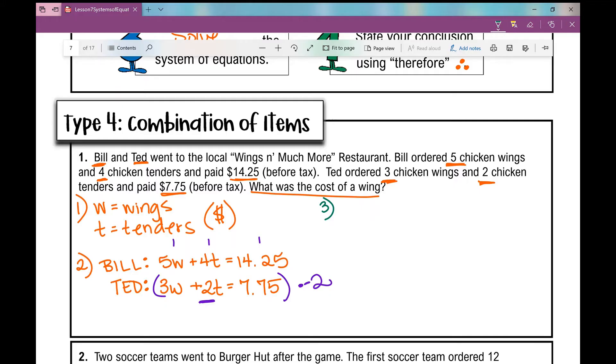So here's what your equations should look like. I'm going to rewrite that first one: 5W plus 4T equals 14.25. And then when I distribute that negative 2, I'll get negative 6W minus 4T equals negative $15.50. And now we can solve this.